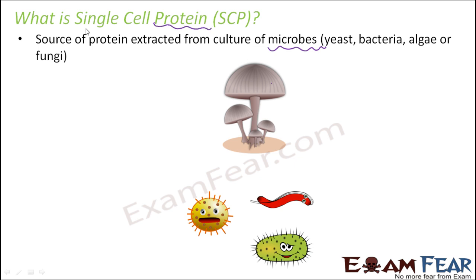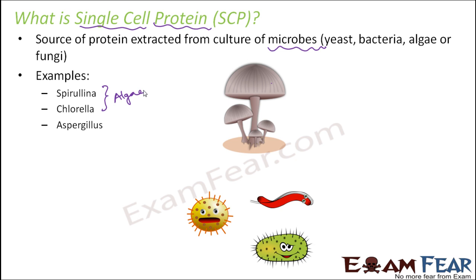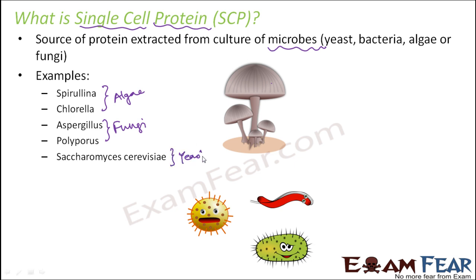It is called protein because microbes are a rich source of protein, and single cell because these are all microorganisms — in fact, bacteria are single-celled organisms. Some examples of edible microbes used as single cell protein are Spirulina and Chlorella, which are both algae. Aspergillus and Polyporus are fungi which are also edible. Saccharomyces cerevisiae is a yeast — the one which helps in the curdling of milk — and we all consume curd. So directly or indirectly, all these microbes act as a source of food.